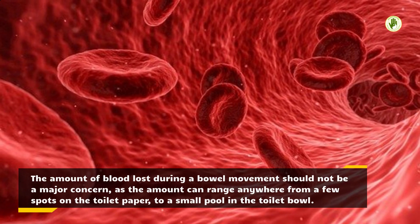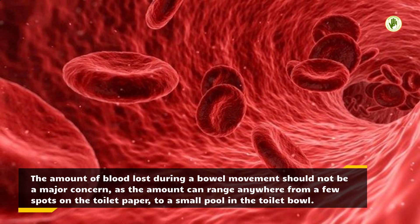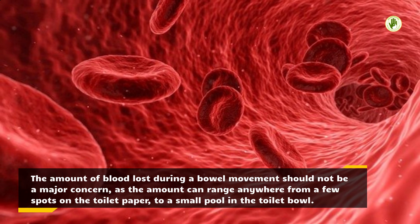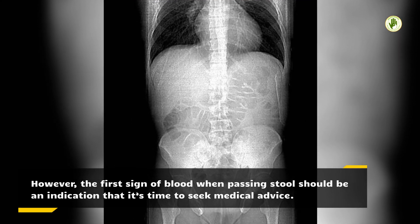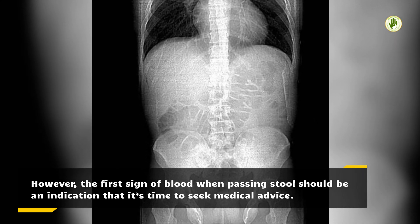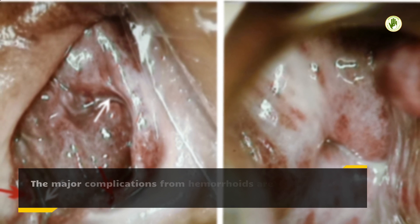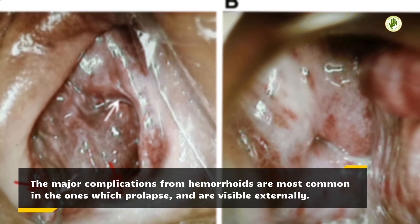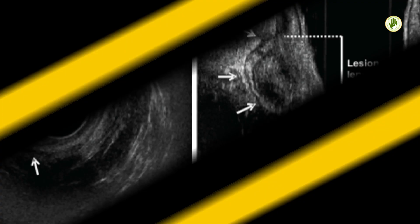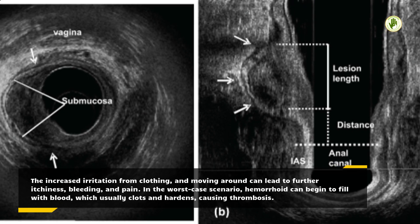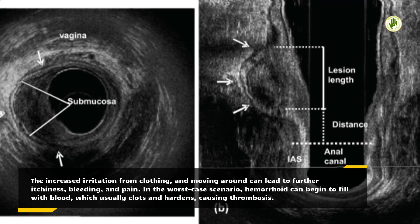The amount of blood lost during a bowel movement should not be a major concern, as the amount can range anywhere from a few spots on the toilet paper to a small pool in the toilet bowl. However, the first sign of blood when passing stool should be an indication that it's time to seek medical advice. The major complications from hemorrhoids are most common in the ones which prolapse and are visible externally. The increased irritation from clothing and moving around can lead to further itchiness, bleeding, and pain.